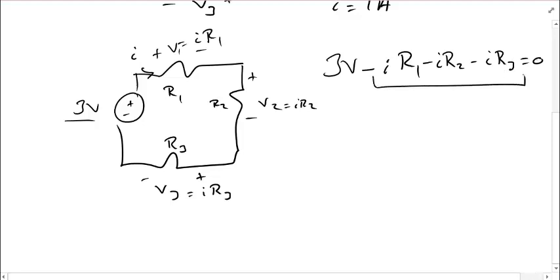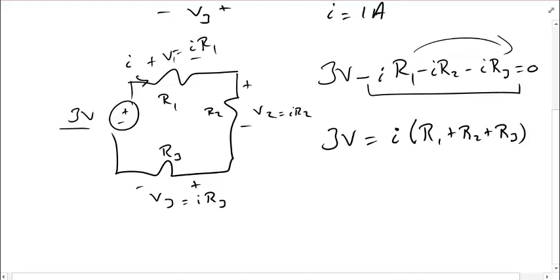In these terms, I can factor I out. Let's do that. 3 volts is I multiplied by R1 plus R2 plus R3. Just so you know there, I moved these also over to the other side, just so that I can deal with positive numbers. This might remind you, in a sense, of Ohm's law.